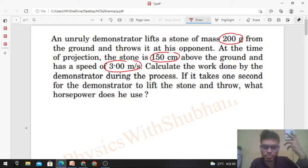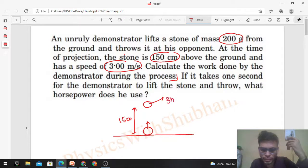This is fairly simple. Initially, there is a stone lying on the ground. The demonstrator applies some force on the stone and lifts it to a height of 150 centimeters from the ground, then throws it with a speed of 3 meters per second.